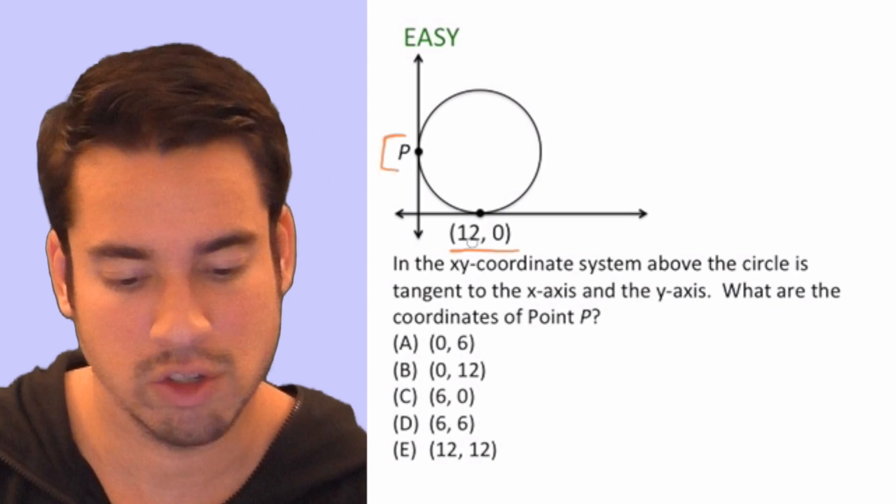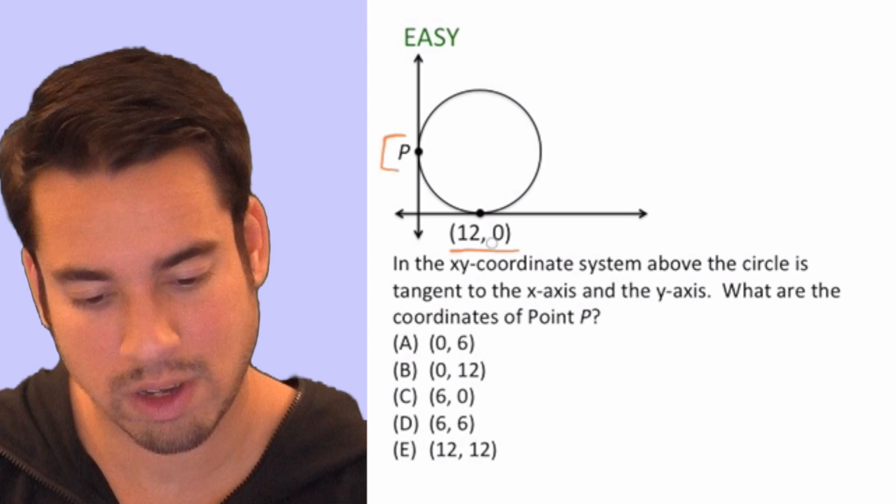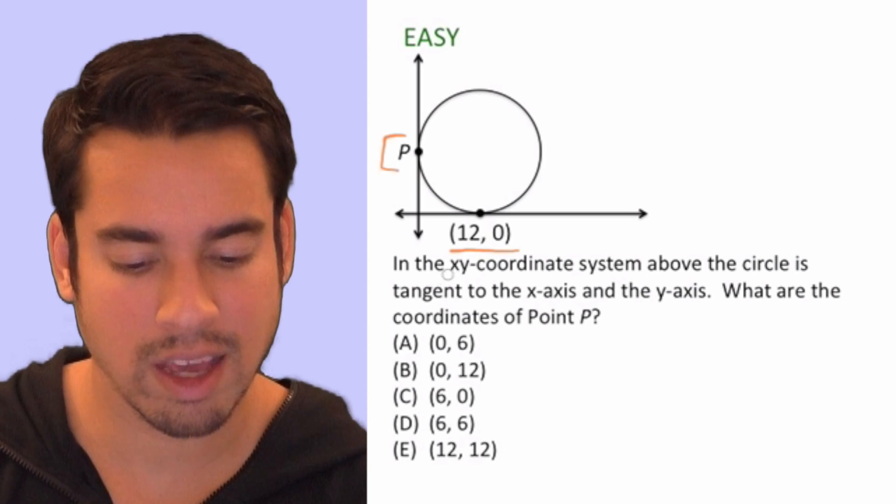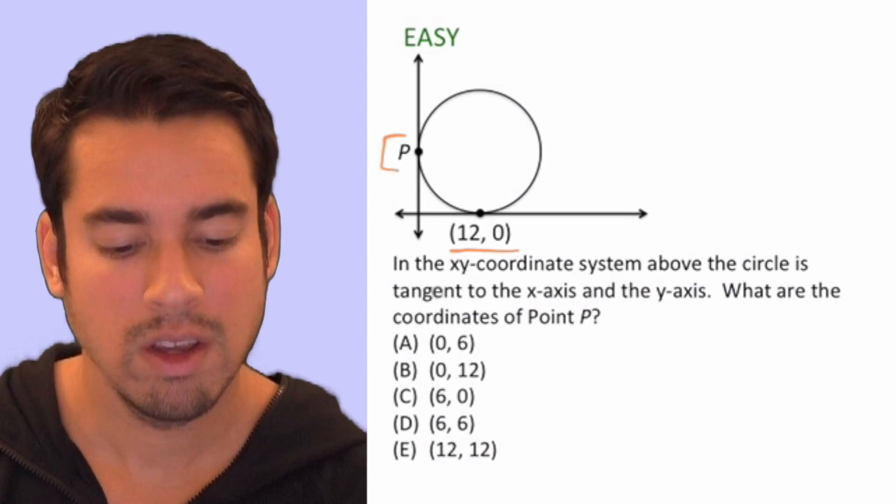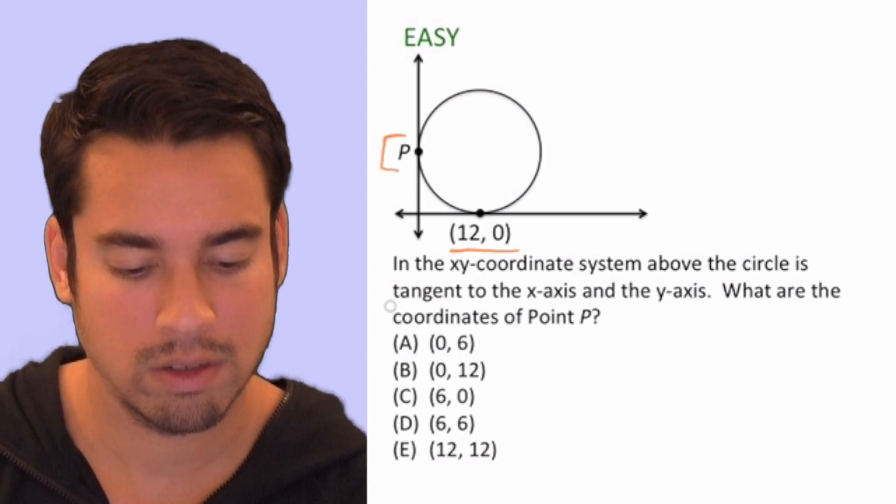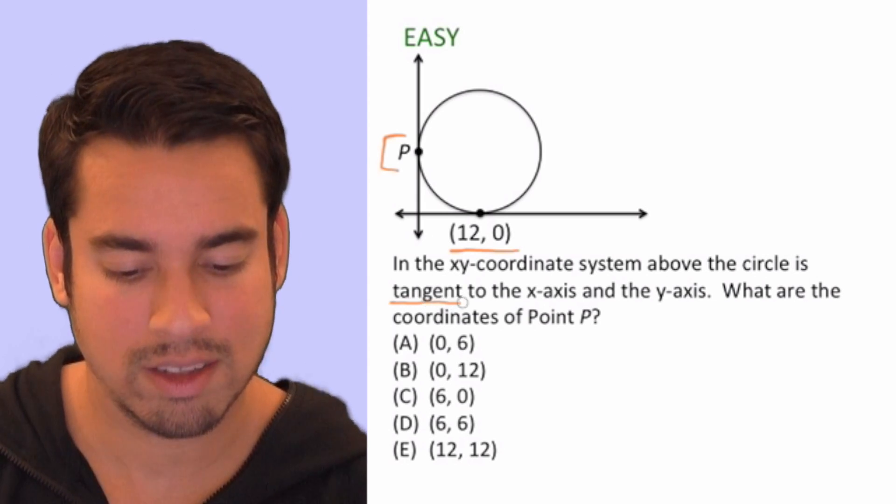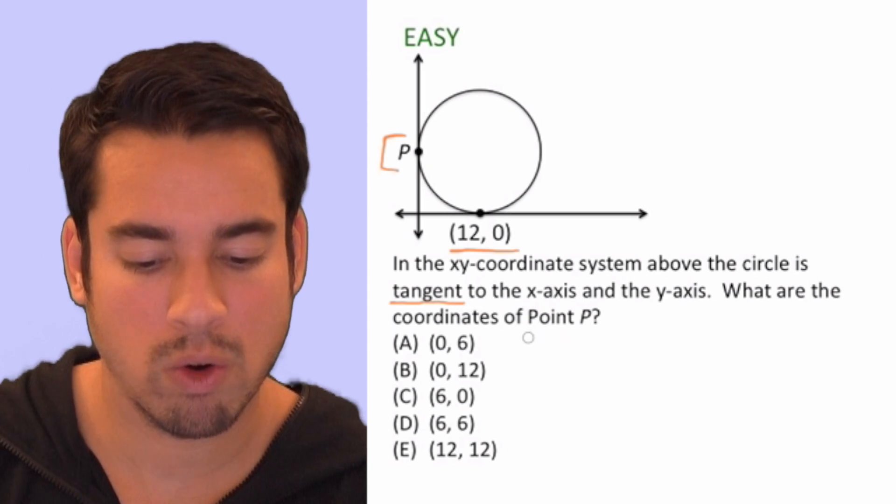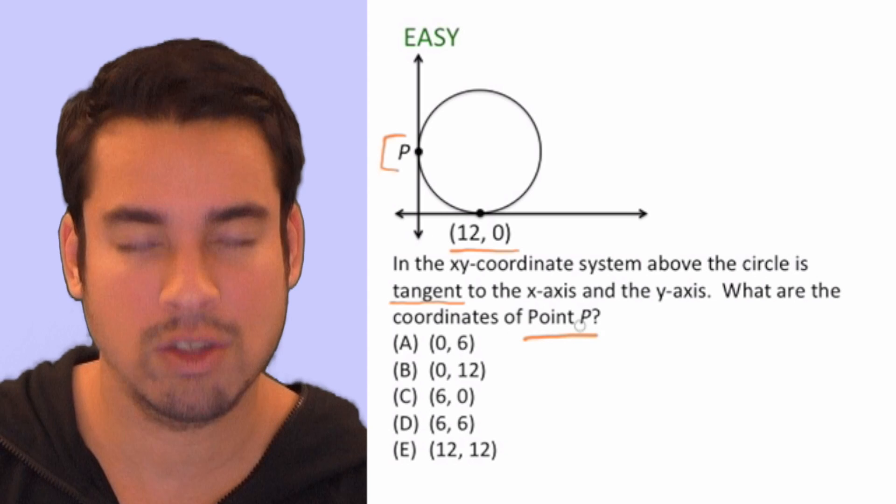Right, so the x-coordinate is 12, the y is 0. We've taken a look at that. Now let's read the question. It says: in the xy-coordinate system above, the circle is tangent—underline that word—is tangent to the x-axis and the y-axis. What are the coordinates of point P? All right, so now we know what we have to find: we have to find the coordinates of point P.